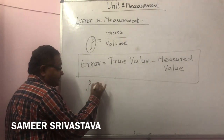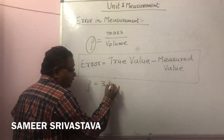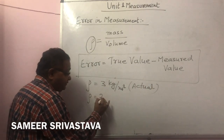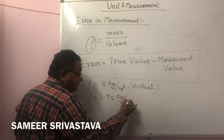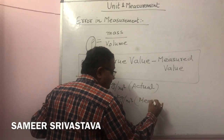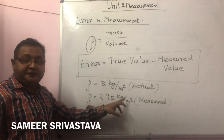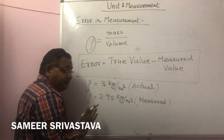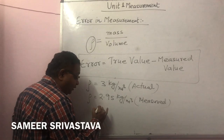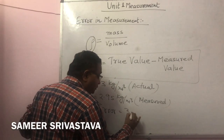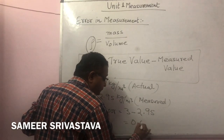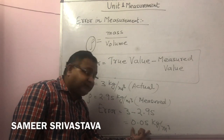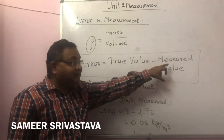For example, if the density of the metal block is 3 kg per meter cube — that is the actual or true value — but after the experiment we get 2.95 kg per meter cube as the measured value. So error is: true value minus measured value = 3 minus 2.95 = 0.05 kg per meter cube. The error is found by subtracting the true value and measured value.